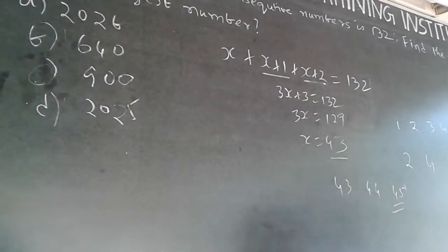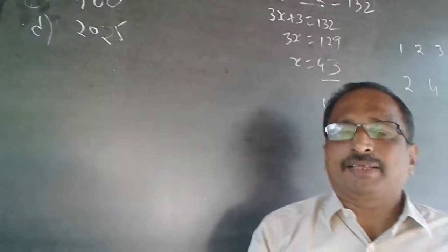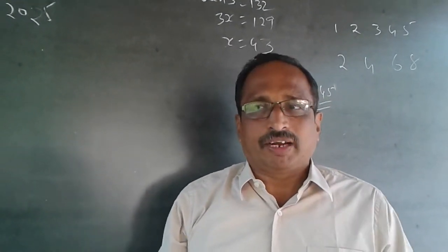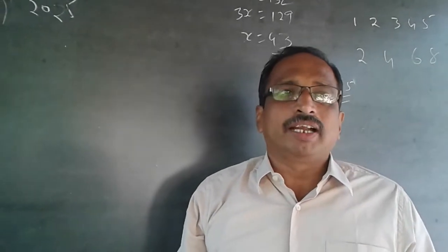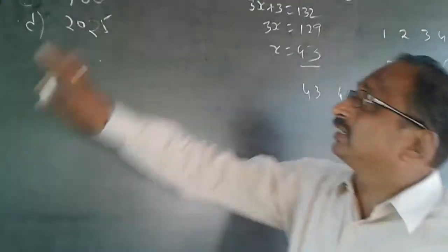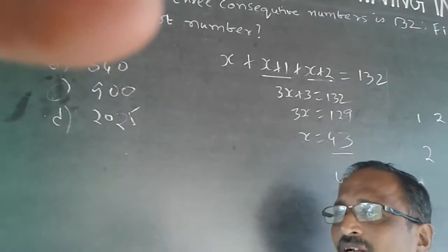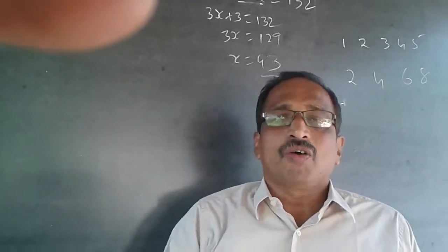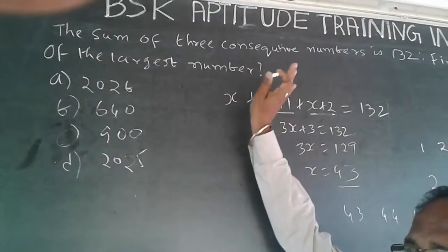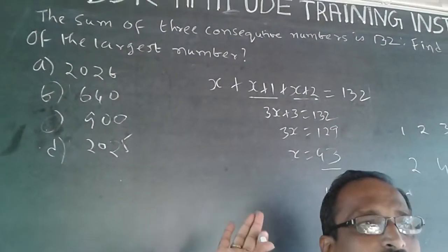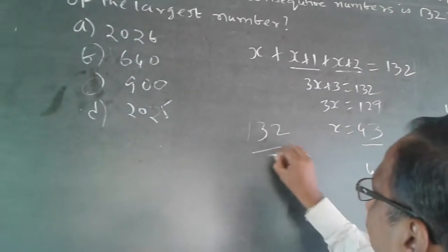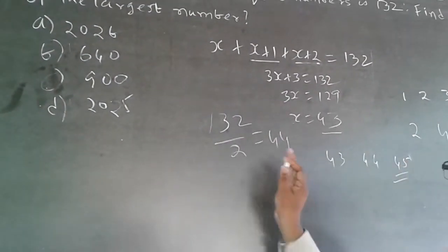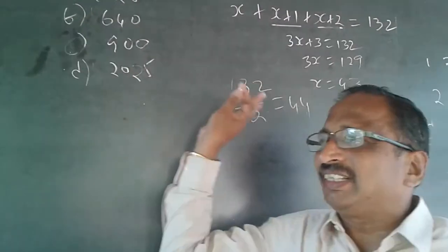Once you understand that method, here is an easier shortcut. Whenever there is an Arithmetic Progression and the count of numbers is odd, the center number is always the average. So for 3 consecutive numbers summing to 132, dividing 132 by 3 gives 44 as the center (average) number. That means the numbers are 43, 44, and 45, and 45² = 2025.